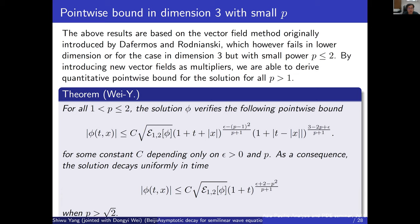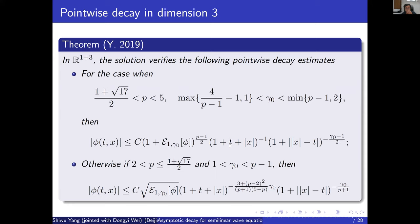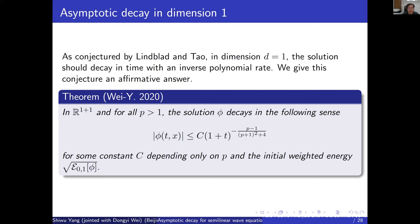For pointwise decay when p is less than two, we use other measures and can show that for p between one and two, the solution has some sort of control. This does not decay for even smaller p, but when we consider the outgoing null curve — where t minus |x| is constant — then the solution decays along outgoing directions. Restricting to p bigger than square root two, we have pointwise decay estimates for the solution.